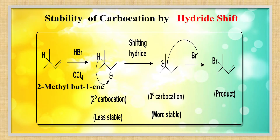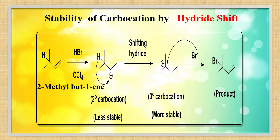When HCl ionizes, it gives H⁺ and Cl⁻. Propene reacts with H⁺ to give two carbocations: a 1° carbocation and a 2° carbocation. Since 2° carbocation is more stable (stability order: 3°>2°>1°), Cl⁻ attacks the 2° carbocation to give isopropyl chloride. Also, sometimes a hydride shift occurs to convert 1°→2° or 2°→3° carbocation for greater stability.